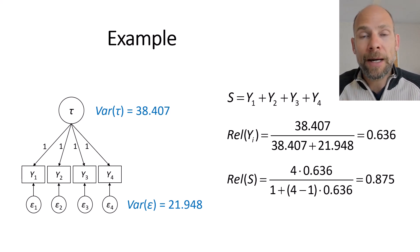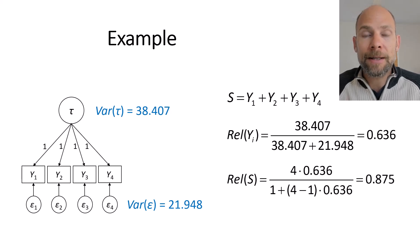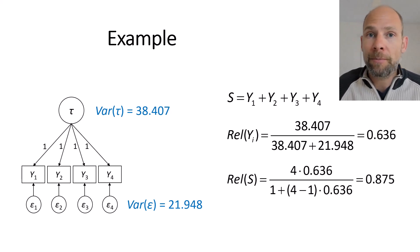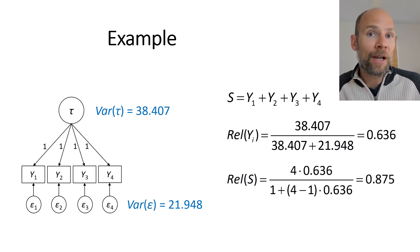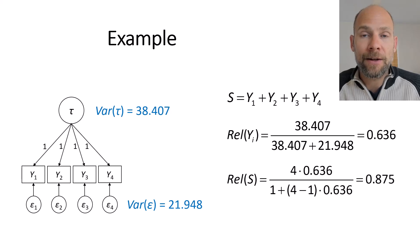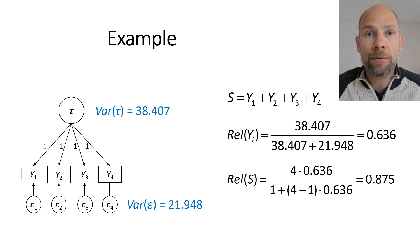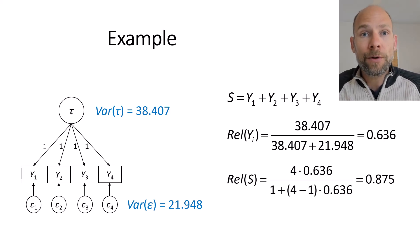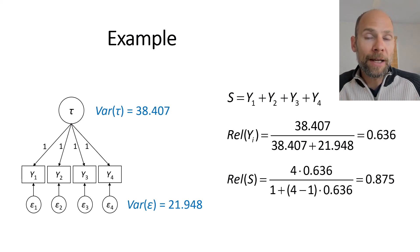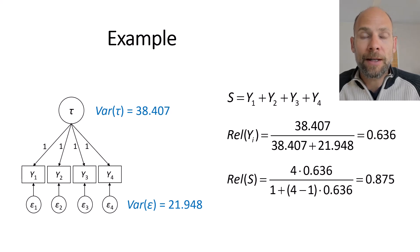That's why the Spearman-Brown formula is useful: it allows us to compute composite reliability for strictly or essentially parallel measures in classical test theory. If your measures are not parallel — only tau-equivalent or congeneric — you would use a different composite reliability formula. For tau-equivalent measures, use Cronbach's alpha; for congeneric measures, use McDonald's omega. I discuss those in separate videos in my classical test theory playlist.